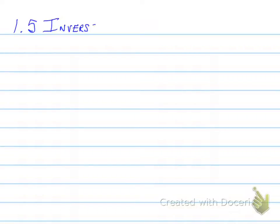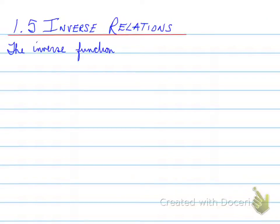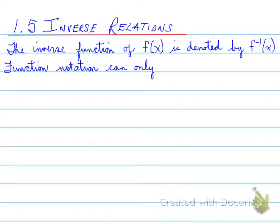All right, 1.5 inverse relations. What we're looking at here is something we've done in grade 11 that we're going to re-explore in grade 12. The inverse relation of f(x) is denoted by a symbol that looks like this. So you see an f with a minus 1.